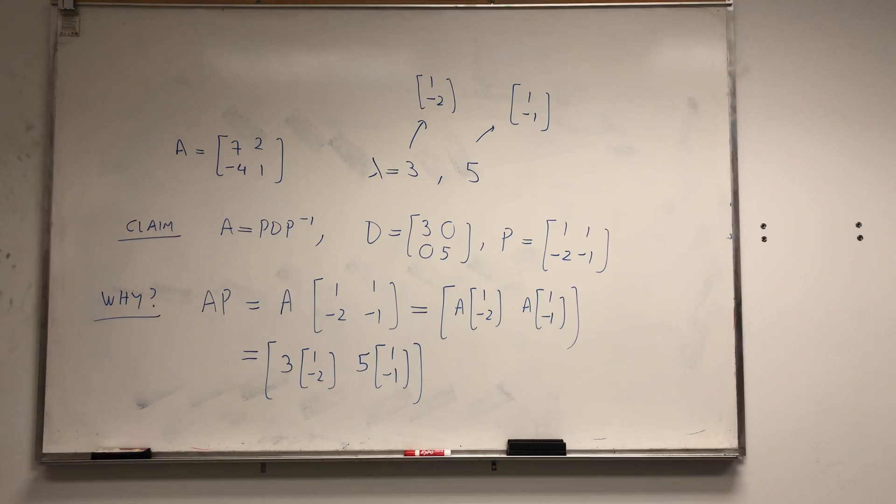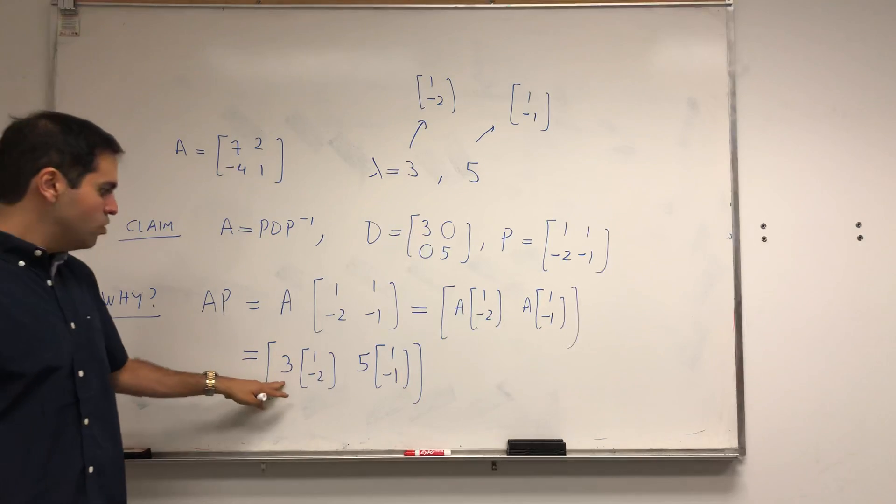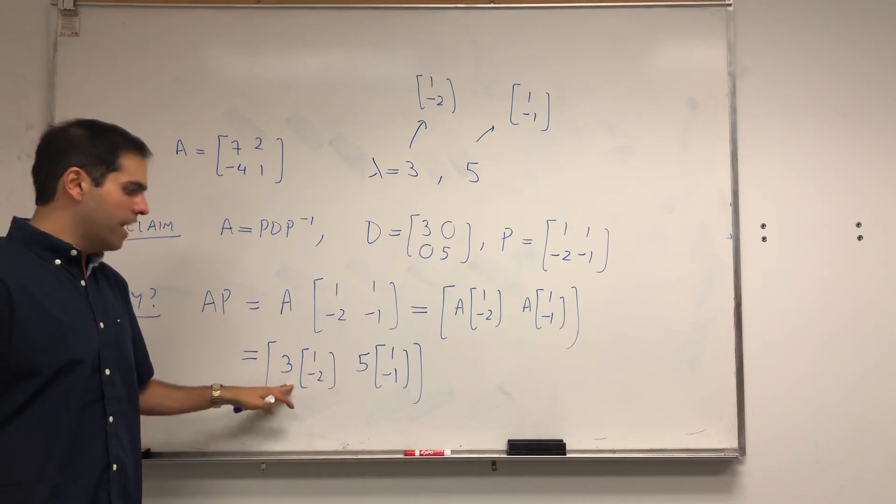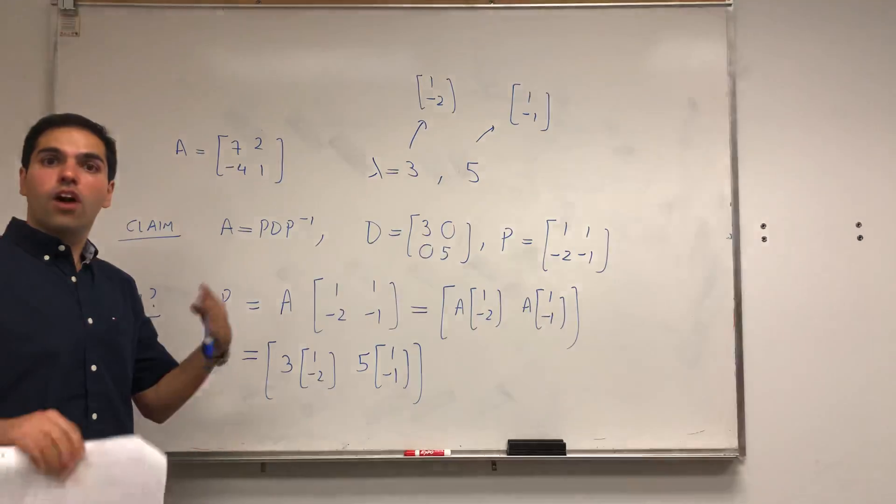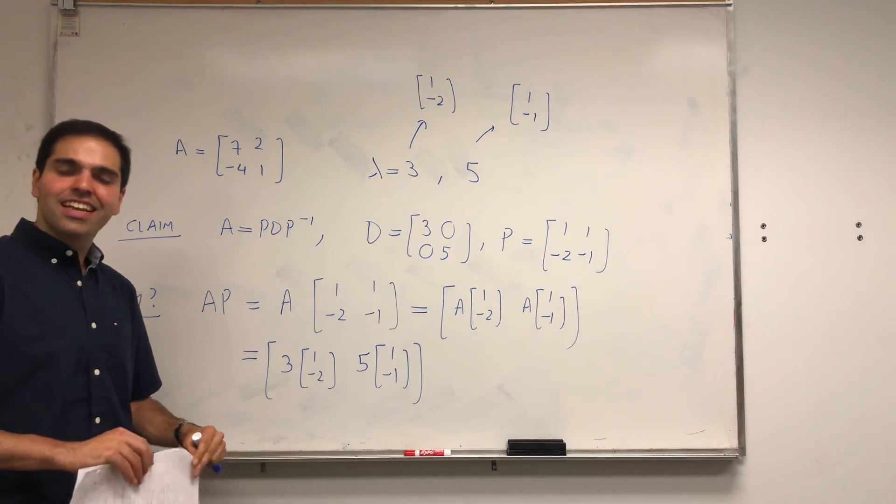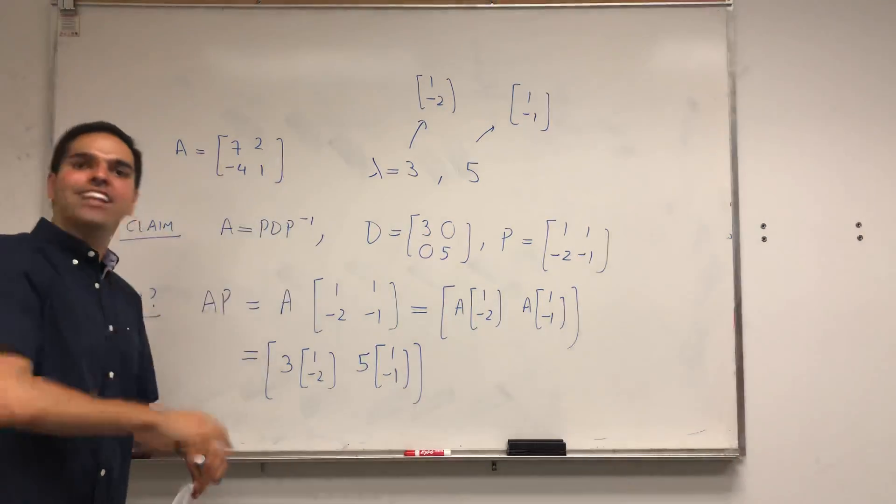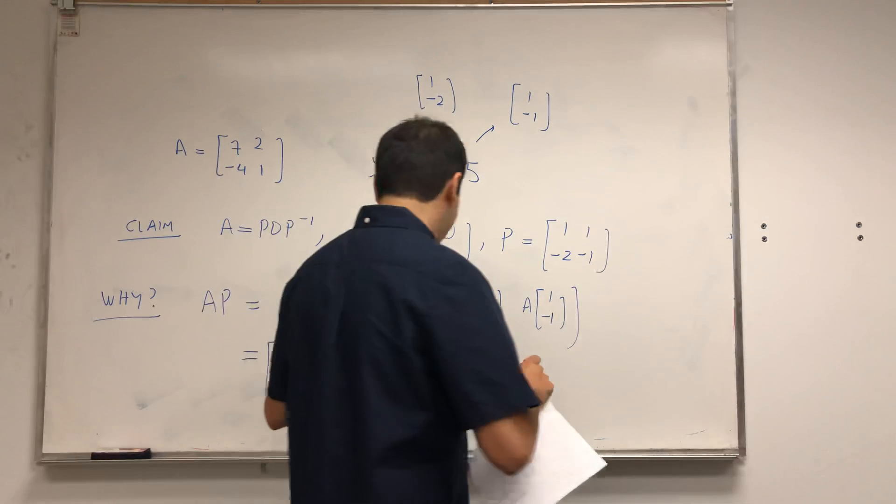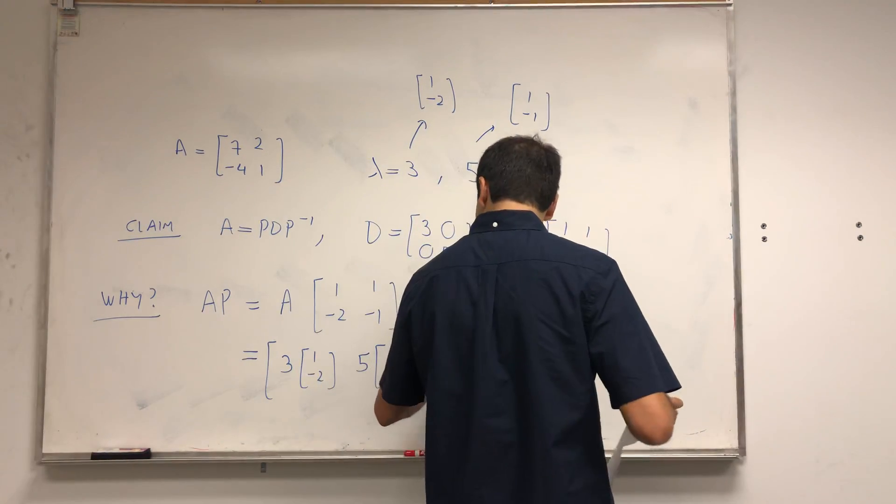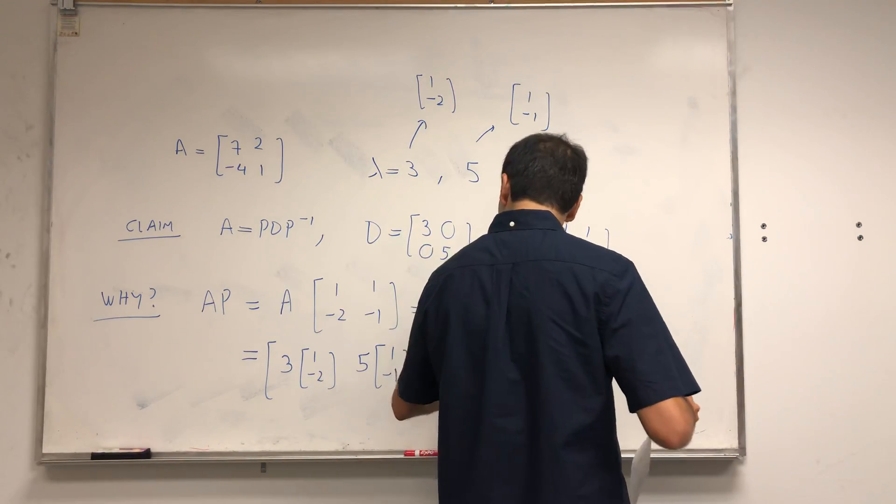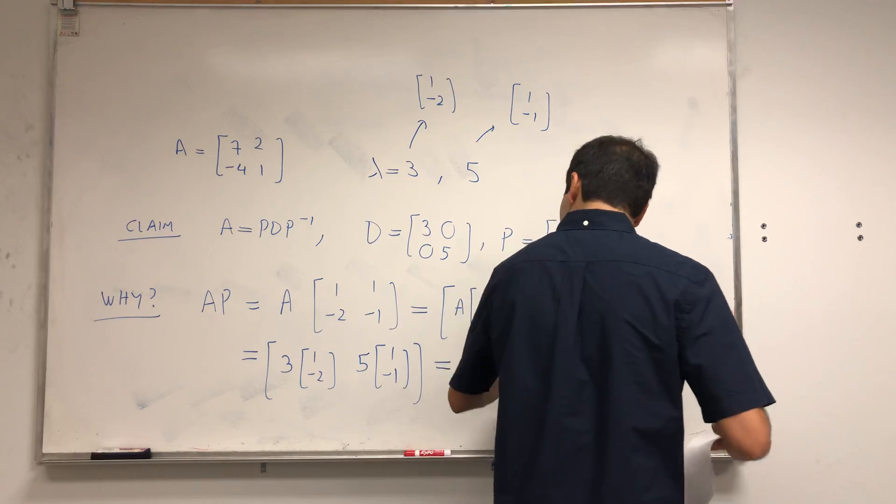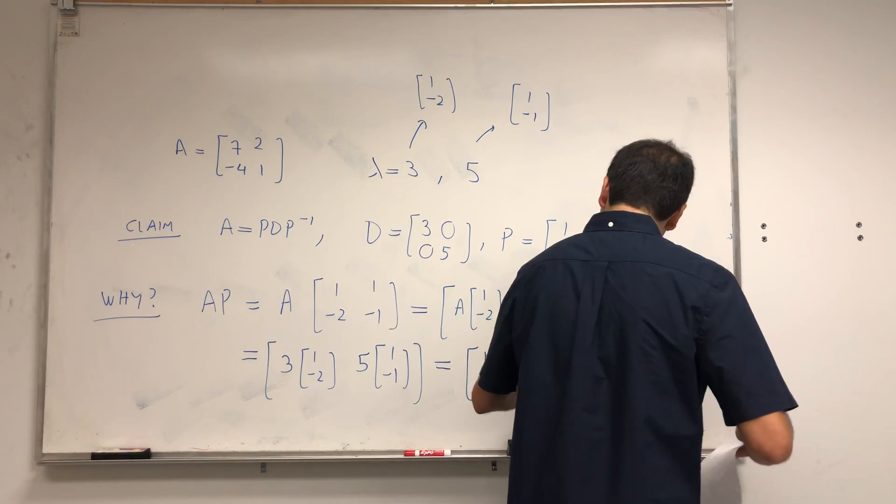So that's one thing. And then the next thing is, now look at this, you're kind of multiplying each column by a number. And column multiplication is actually the same thing as right multiplication by a diagonal matrix. So this is the same as [1, -2; 1, -1] times [3, 0; 0, 5].